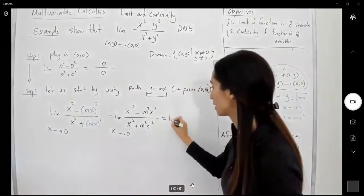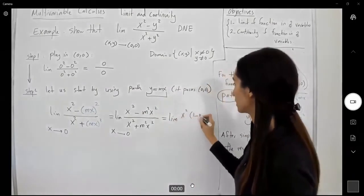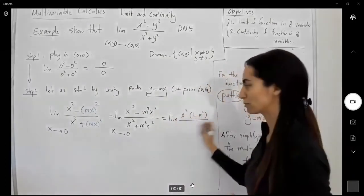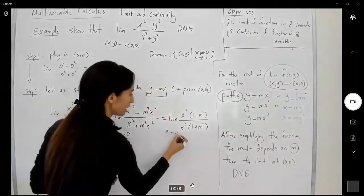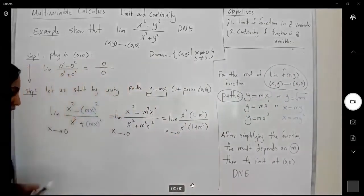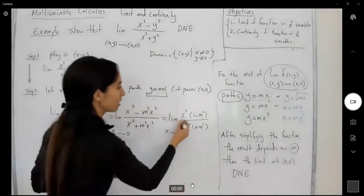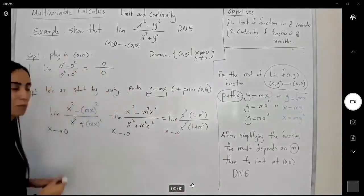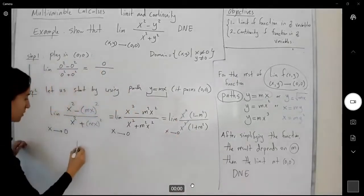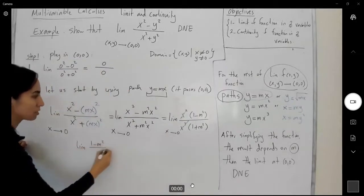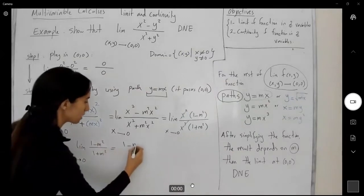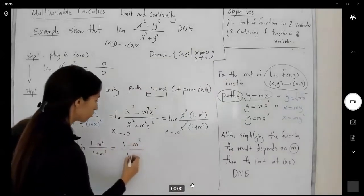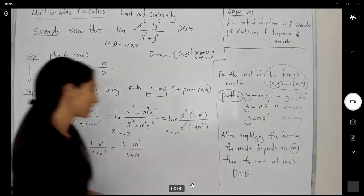As you can see, you can cancel out the common factor. The limit of 1 minus m squared divided by 1 plus m squared. x approaches 0. This is just a constant. 1 minus m squared divided by 1 plus m squared. m is a constant.